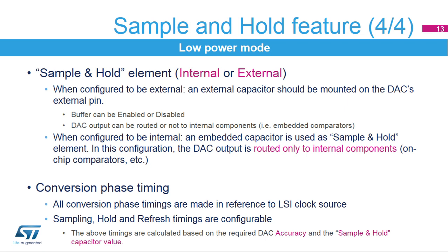The capacitor can be external or internal. When external, the buffer can be used and the DAC output can also be routed to internal components such as embedded comparators. When internal, an embedded capacitor is used and the DAC output is routed only to internal components. The charging time depends on the capacitor value. The timings for the three phases are in units of LSI clock cycles.